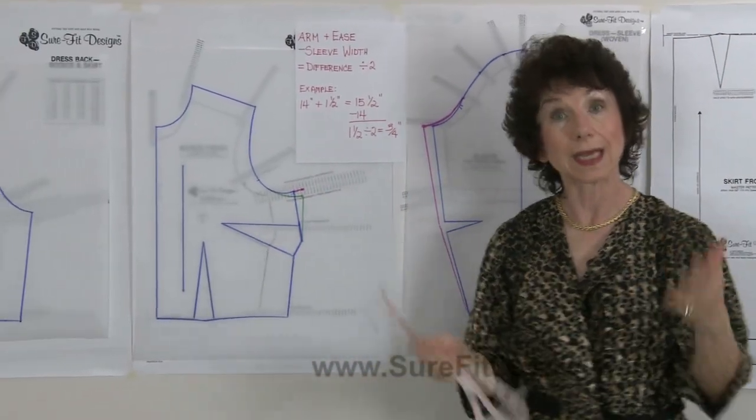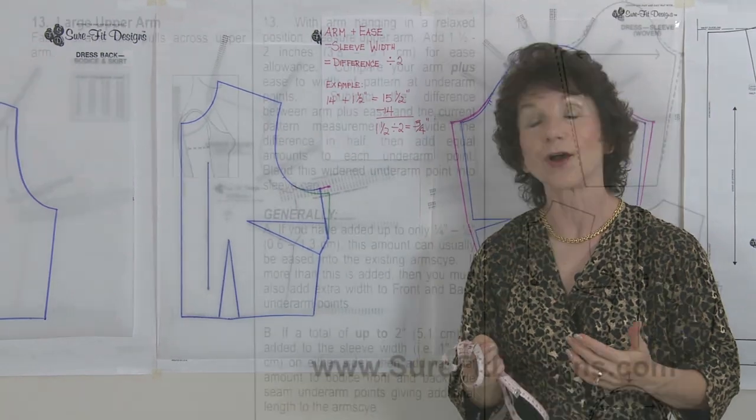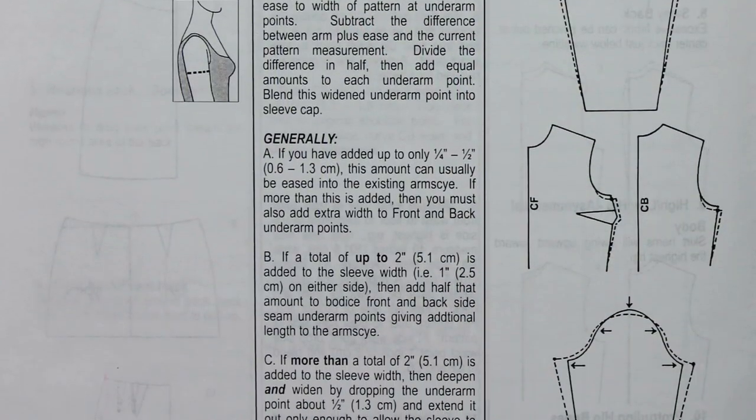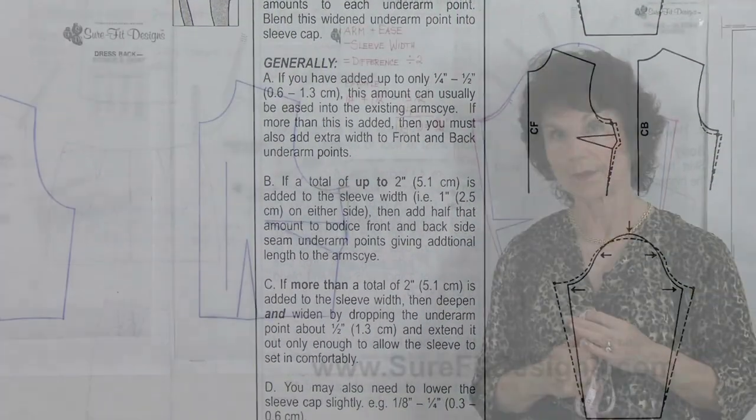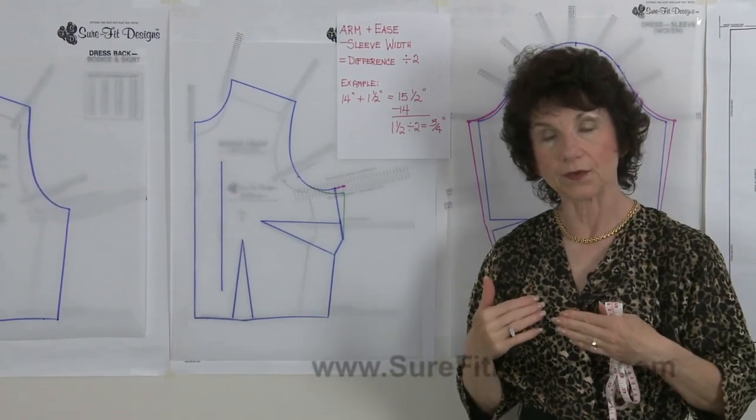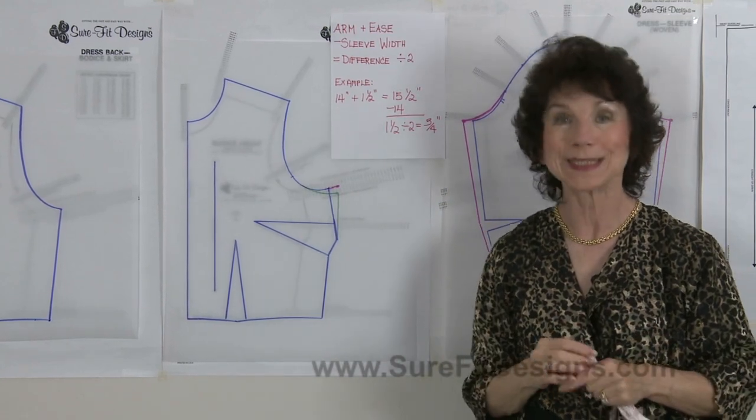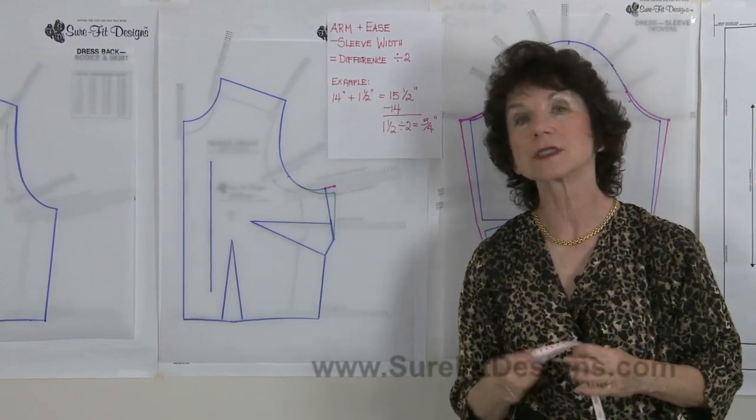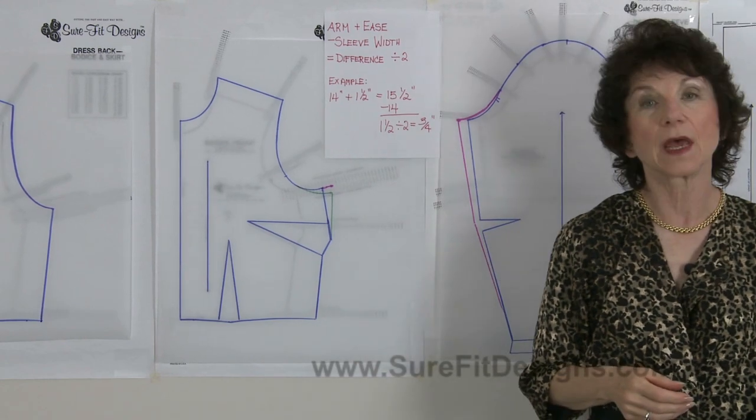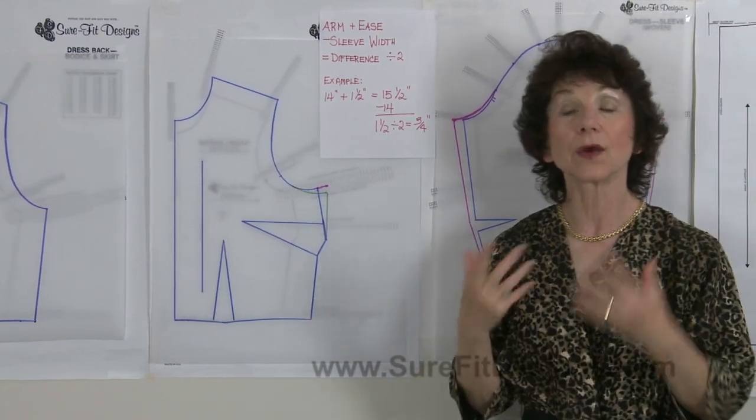But this is basically how you need to deal with the underarm, and again, this is all covered on page 16 of the dress kit instruction book. Now this is if you would like to have the sleeve as a relatively smooth set-in sleeve. Of course there are other sleeve designs that are going to allow you to get the fullness that you require.